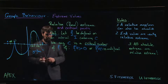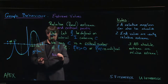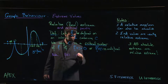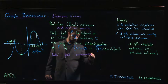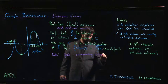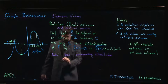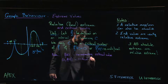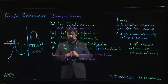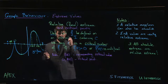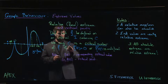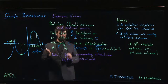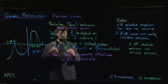A little bit more terminology: f of C is called the corresponding critical value. A critical point — sometimes we get a little lazy with language and use 'critical point' to refer to the number C. To be precise, C is the critical number and the corresponding critical point is the point on the graph, because C is in the domain so (C, f(C)) is a point on the graph.